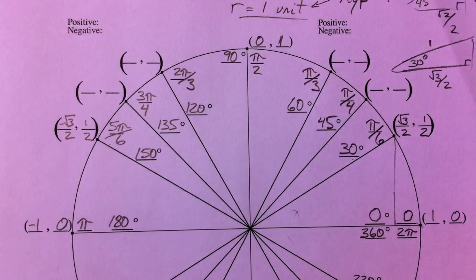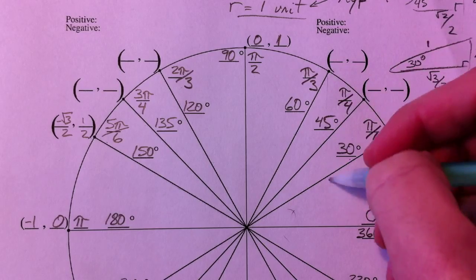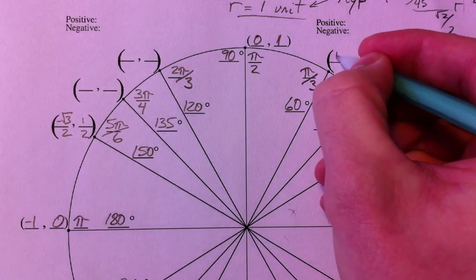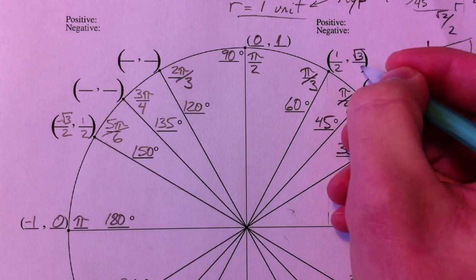So let's deal with the 60s now because they're the same ratios except the x's and the y's are switched. Because in the 30 degree, with the 60 as the base, the x is the short one, and so this is 1 half. And then root 3 over 2 is the y value.